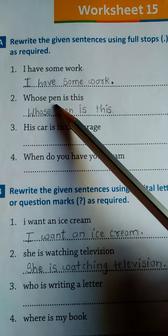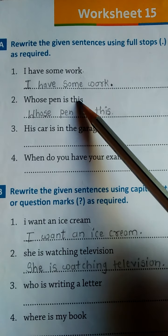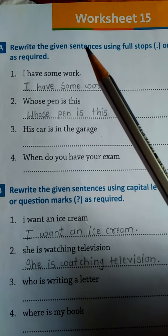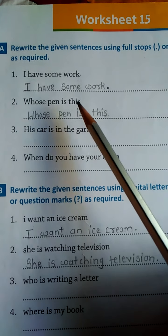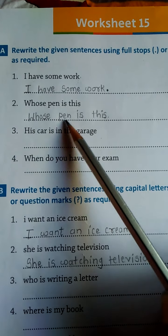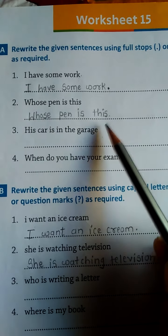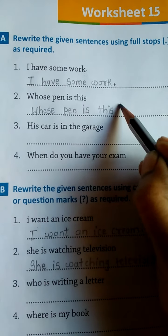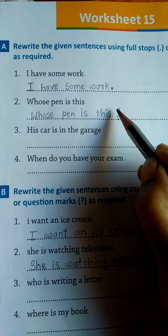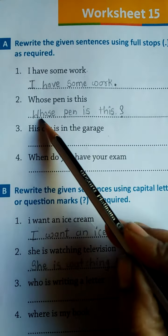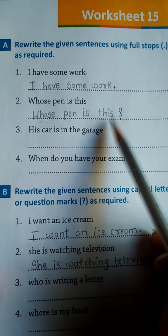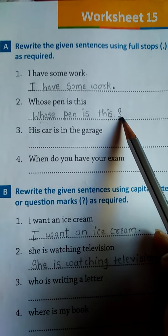Number two sentence is: 'Whose pen is this?' — meaning 'ye pen kiska hai?' This is a question, so we write it as it is and place a question mark at the end: 'Whose pen is this?'